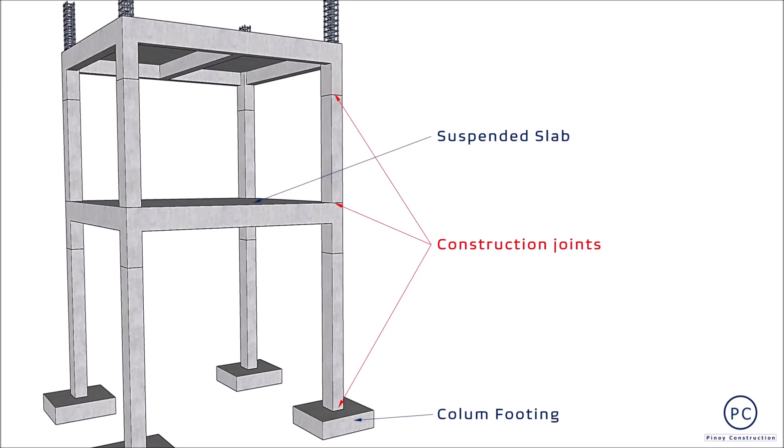Una, sa ibabaw ng column footing sa first floor level at sa ibabaw ng slab, as well as within H over 4 ng clear heights sa underside ng beams sa succeeding floors. Kaya, masasabi na doon din nagkakaroon ng construction joints. In some cases, maaari ding magkaroon ito sa floor system.